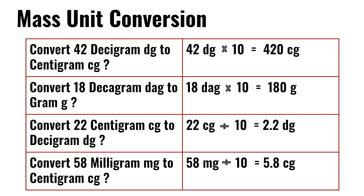Mass unit conversion. Convert 42 decigrams to centigrams: 42 decigrams times 10 is 420 centigrams.